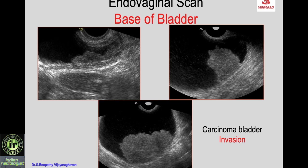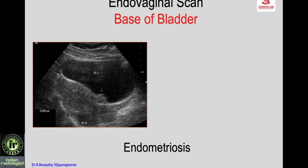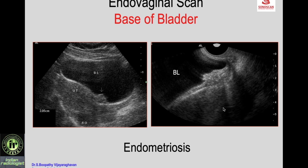Endovaginal or transrectal scan can also evaluate the base of the bladder. Three examples of carcinoma of the urinary bladder illustrate how you can assess infiltration of the serosa — here it is not infiltrated, here infiltration of the mural layer is seen but the serosa is intact. Serosal involvement is better seen, and the level of tumor invasion can be better assessed by endovaginal or transrectal scan. Another example shows endometriosis involving the urinary bladder at the interface — you see the irregular mass at the level of the LSCS scar with loss of interface between the uterus and bladder, protruding into the bladder.